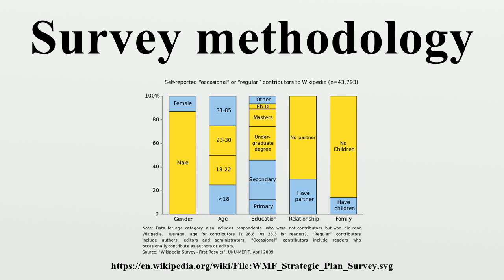Survey samples can be broadly divided into two types: probability samples and non-probability samples. These are discussed in several sources including Salent and Dillman. Stratified sampling is a method of probability sampling such that subpopulations within an overall population are identified and included in the sample selected in a balanced way.